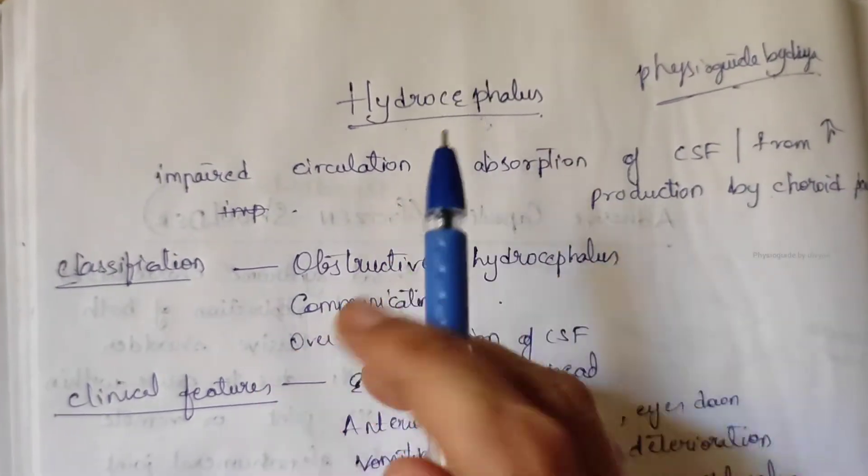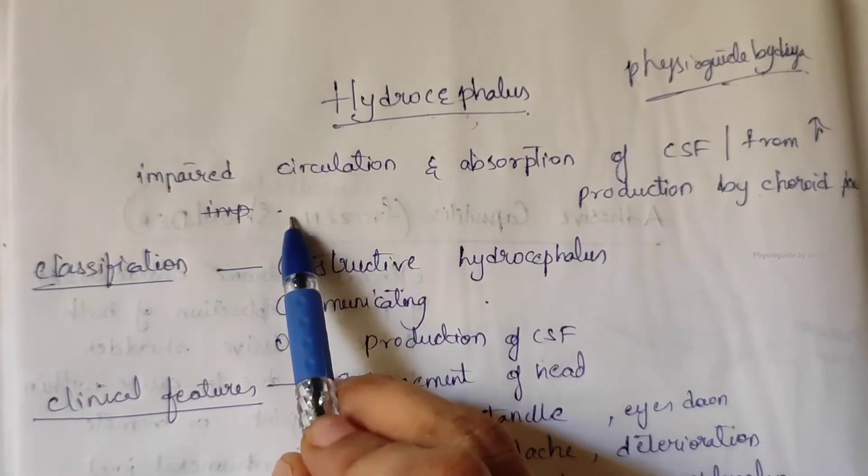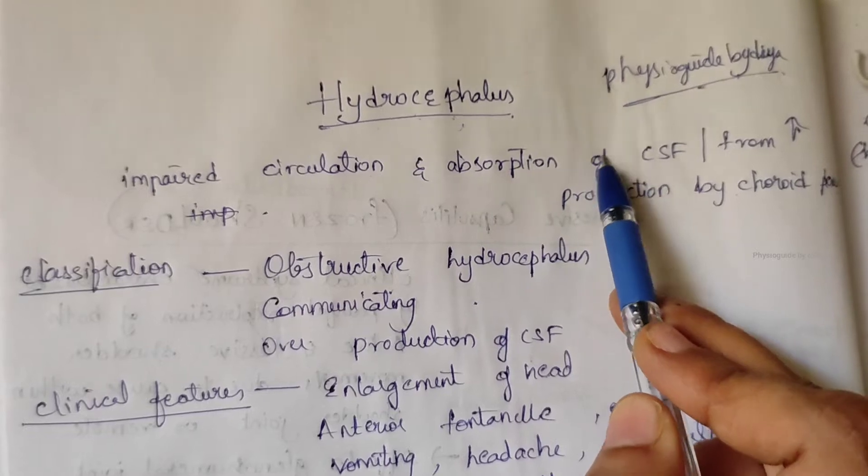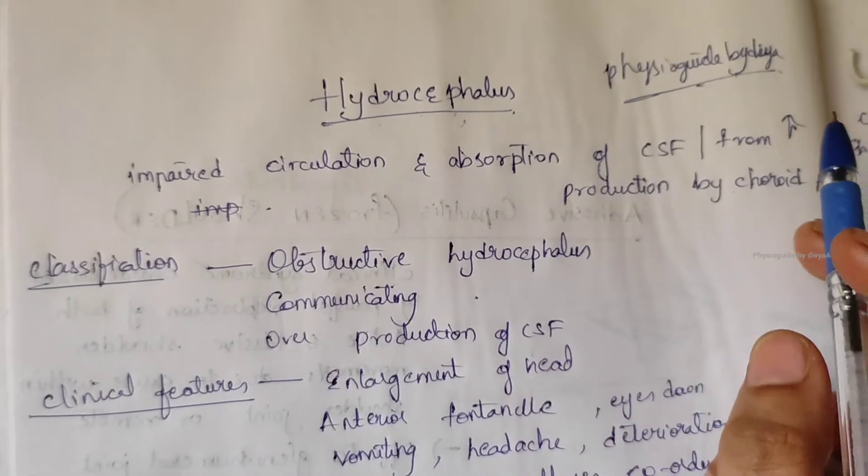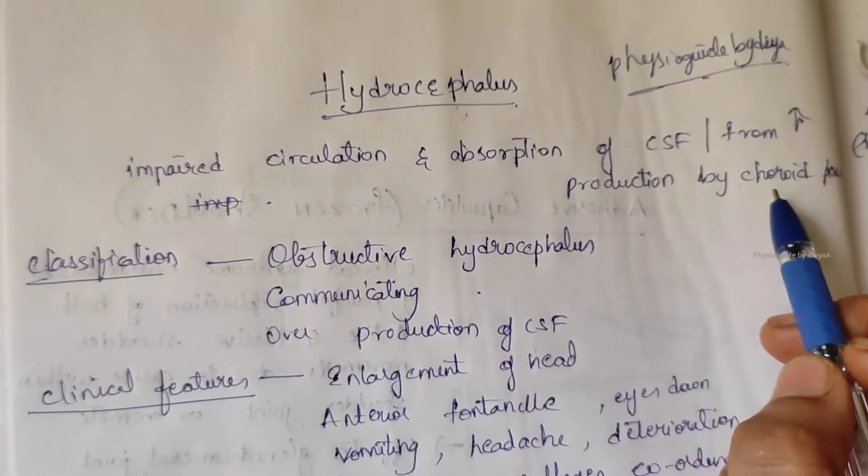As a result, there will be impaired circulation or absorption of cerebrospinal fluid, or from increased production by choroid plexuses. This is the main definition.